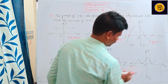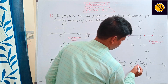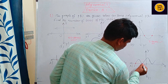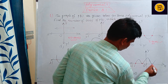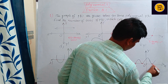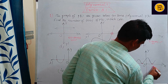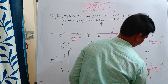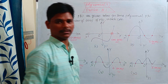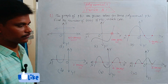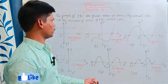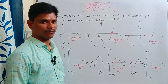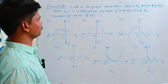See here. In this figure, this polynomial has one, two, three zeros. The number of zeros of this polynomial is three. So this is about Exercise 2.1, Example 1.